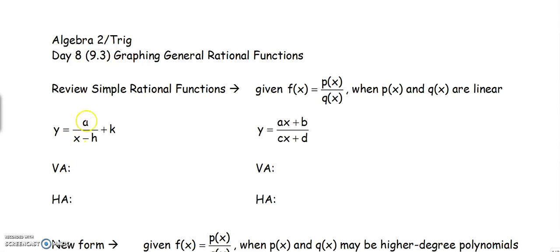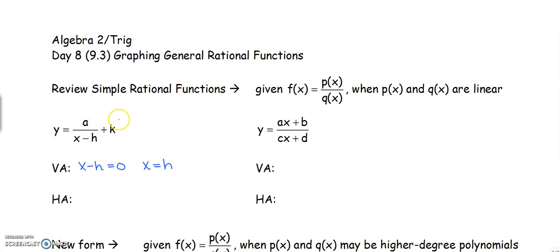When we have y equals a over a linear function plus k — where a means we just have a number on top and our linear function on the bottom plus k — to find the vertical asymptote, you set the bottom equal to 0 and solve. So we have x minus h equal to 0, therefore our vertical asymptote is at x equals h. Our horizontal asymptote is whatever number is being added or subtracted on the outside, so our horizontal asymptote is at y equals k.